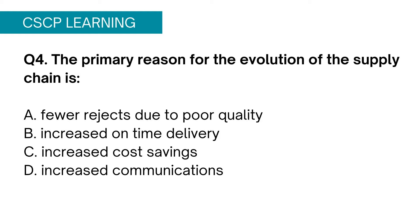Option D, increased communication, is the best of all available options because it enhances collaboration and integration among all entities in a supply chain. This results in increased visibility, which helps you make timely decisions that eventually reduce cost and improve delivery time. For example, if a retailer is sharing point-of-sale data with you and inventory of a particular item drops to a certain level, you can instantly take proactive action regarding inventory replacements and on-time delivery. Therefore Option D sums up Options B and C, and the correct answer is Option D.